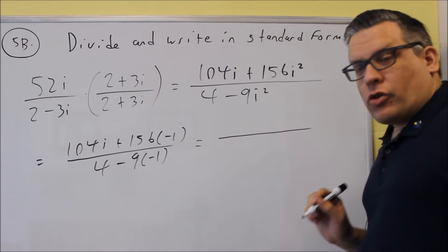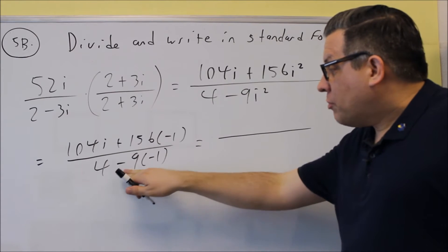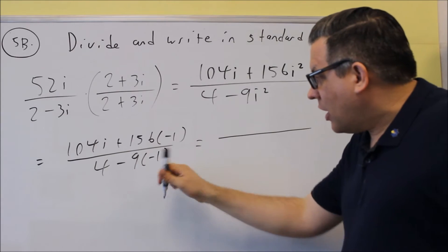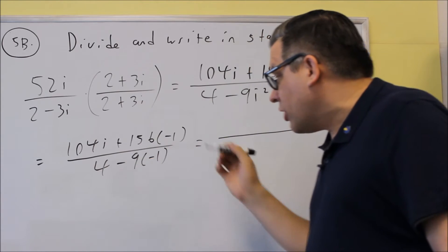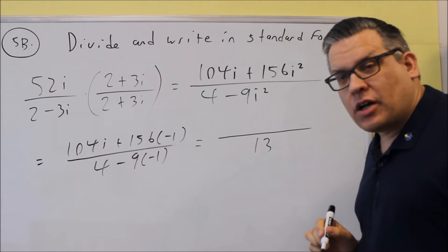Then I want to simplify this further. On the bottom we get 4 minus negative 9, 9 times negative 1, so really it's 4 plus 9, or positive 13 we get on the bottom.